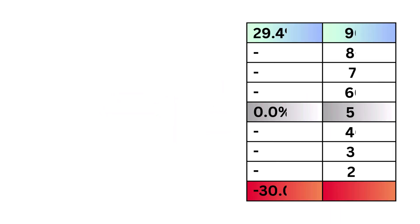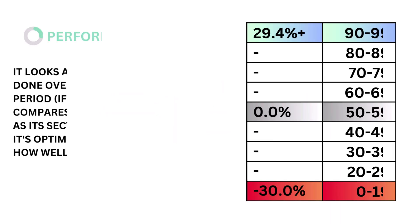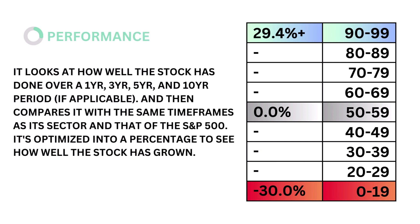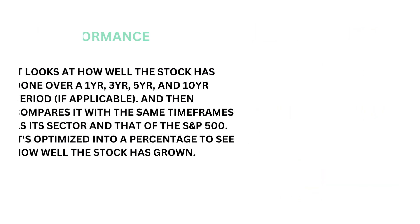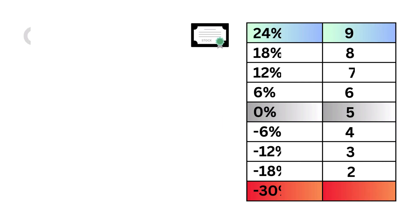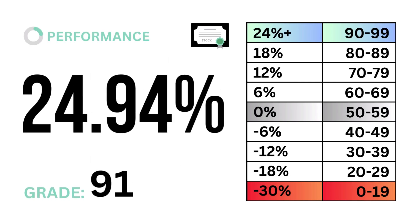First, stock performance, which accounts for 30% of the stock factor. Performance looks at how well the company's stock has done over a 1, 3, 5, and 10-year period, if applicable, and then compares it with the same time frames as its sector and that of the S&P 500. It's optimized into a percentage to see how well the company's stock has grown. The models tell us that a performance rate of 0% is considered average. Here's our performance rate and performance grade.